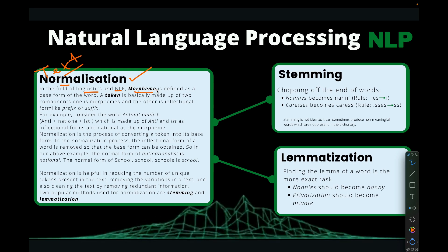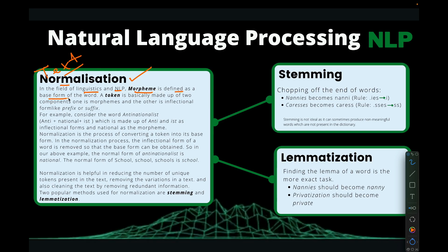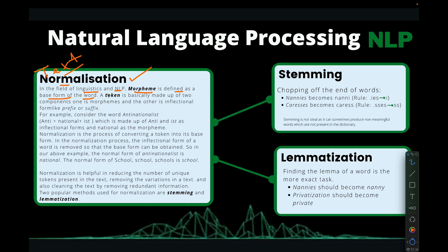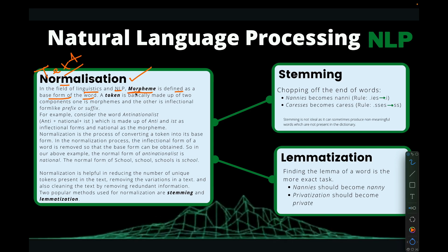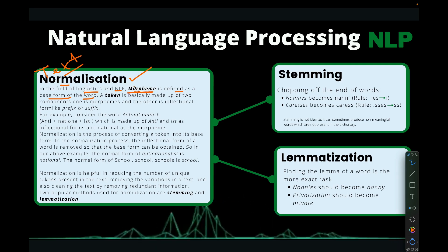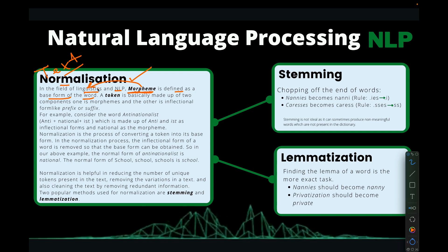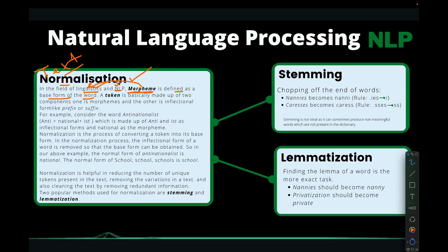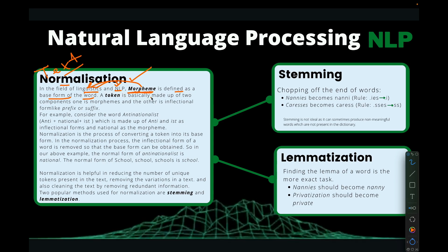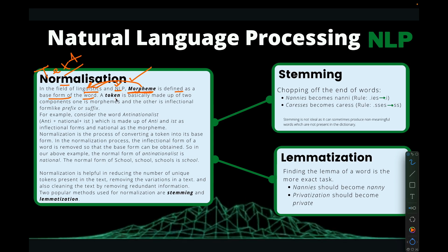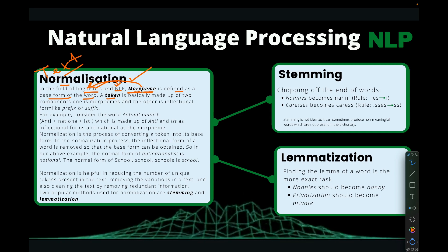In linguistics and in NLP we have what is called a morpheme, which is defined as the base form of a word. This term is mainly seen in linguistics, but we borrowed it into NLP since NLP is also a form of natural language processing from linguistics. Previously we learned about tokens, which are the individual words.